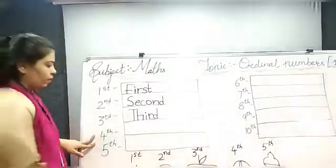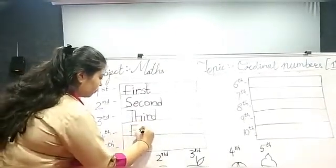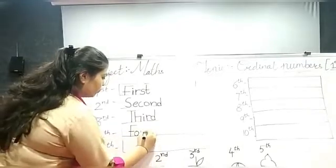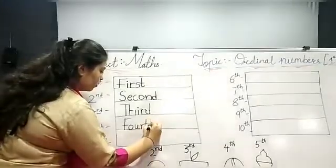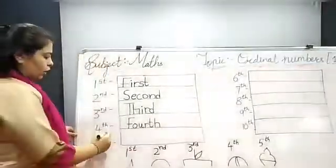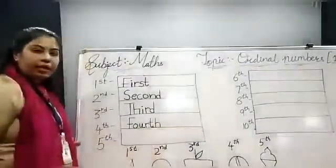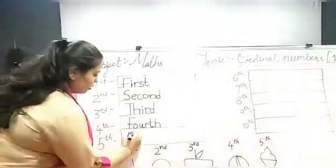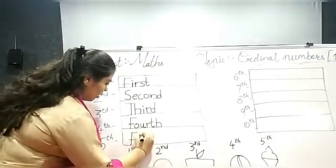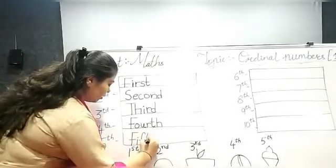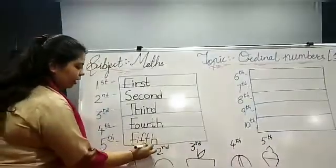Now, 4th. So, F, O, U, R, T, H — Fourth. आपे 4th में क्या है? T, H. And आपे place में क्या है? T, H. Now, 5th. So, F, I, F, T, H — Fifth. T, H.